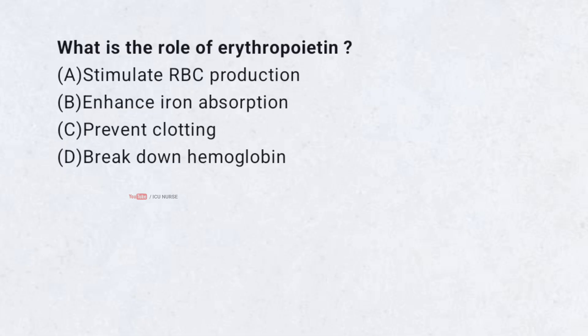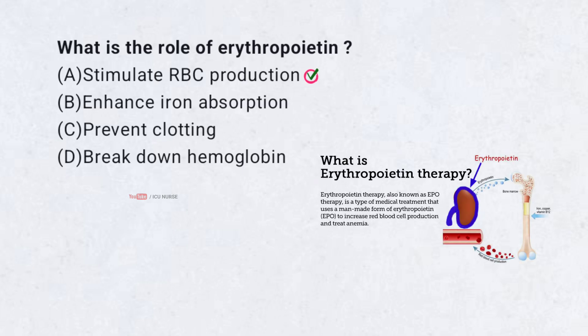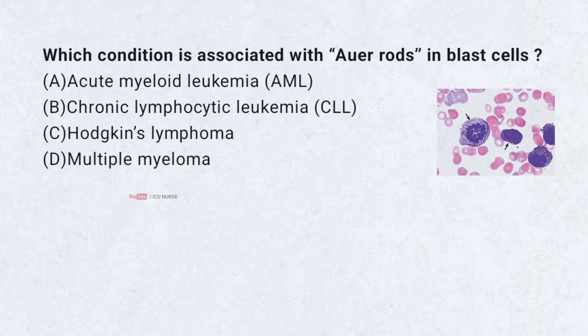What is the role of erythropoietin? A. Stimulate RBC production, B. Enhance iron absorption, C. Prevent clotting, D. Breakdown hemoglobin. Correct answer: A. Stimulate RBC production. Erythropoietin, produced by the kidneys, signals the bone marrow to make red blood cells.